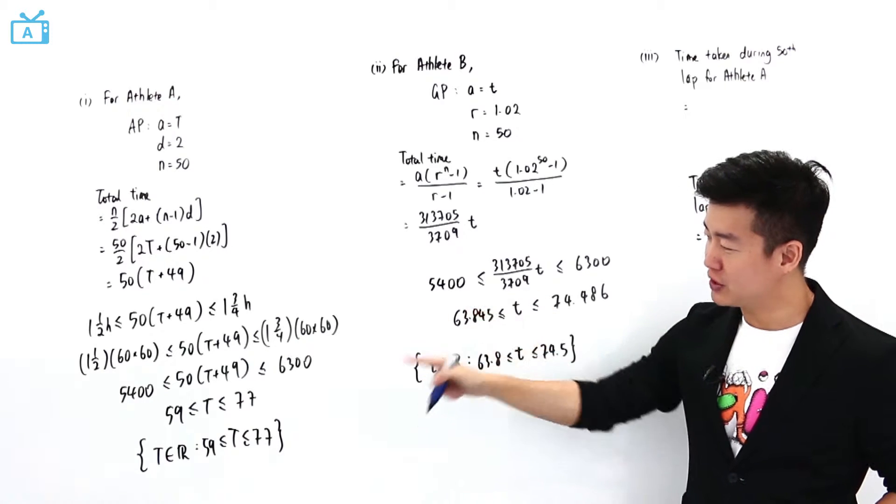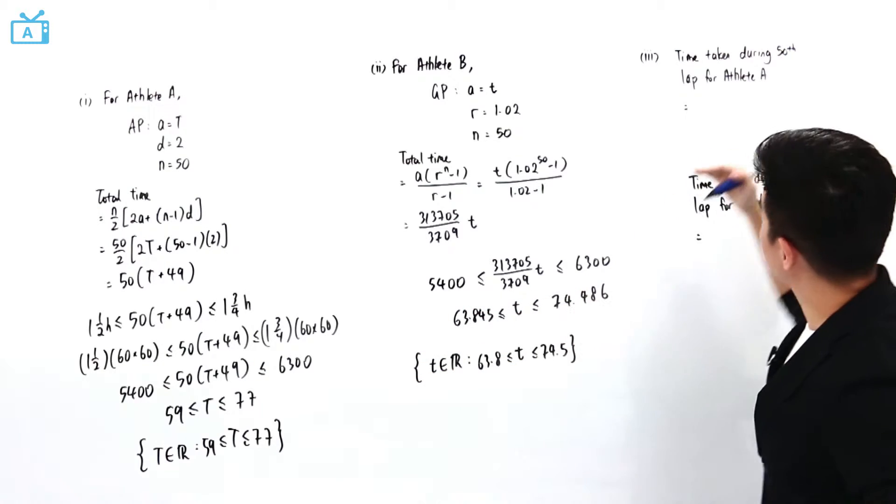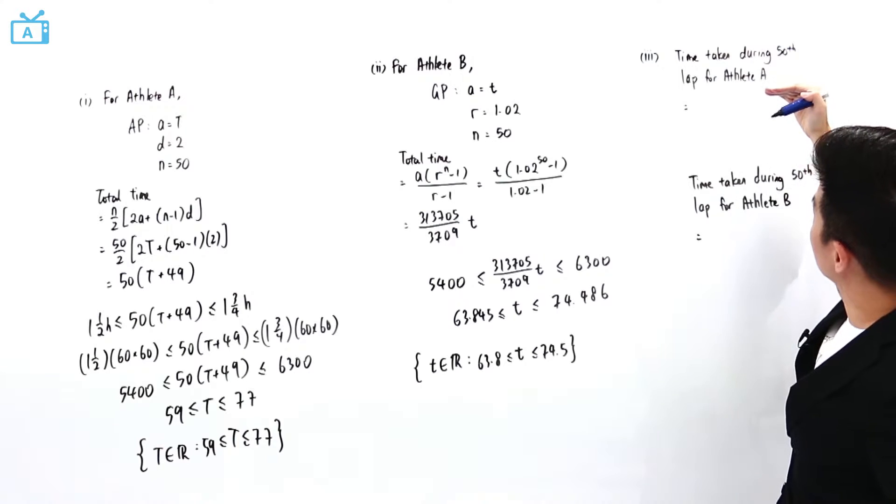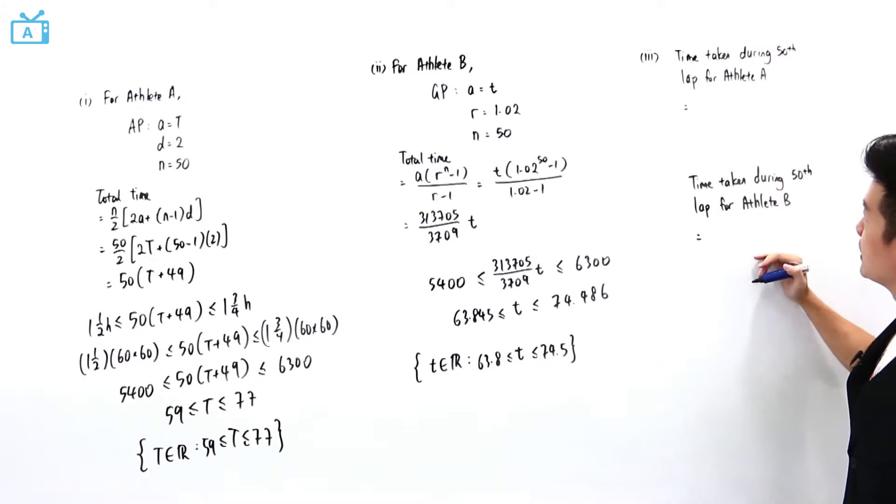I'm going to use these two different values for T to calculate the time taken during the 50th lap for athlete A and then athlete B.